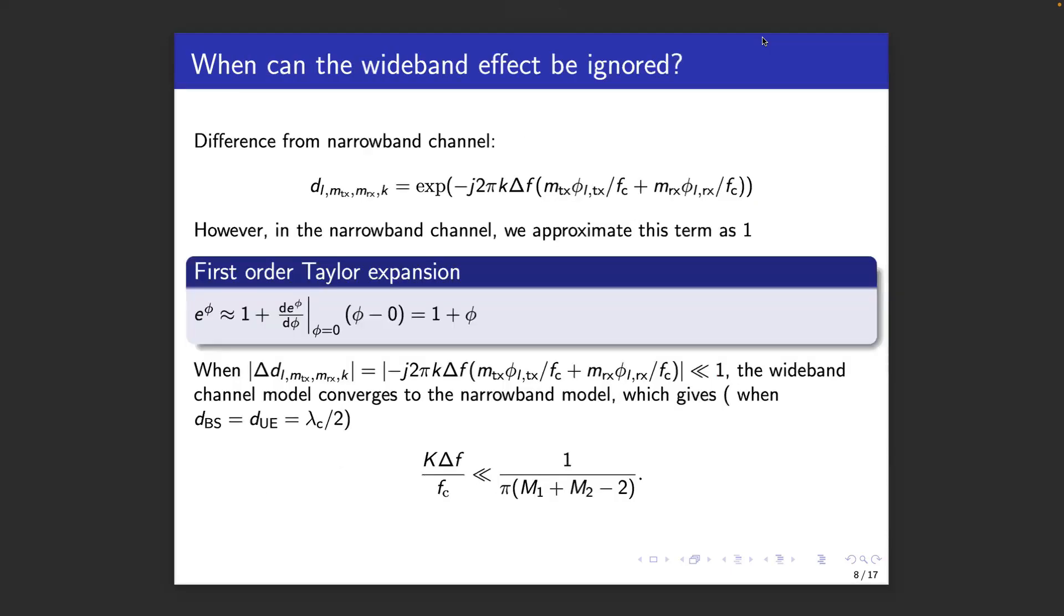Since we now have two models, one simple, the narrowband model, and one more complex, the wideband model, it is natural to ask which model can be used when. This slide aims to provide an answer to this question. The entries in DL that represent the difference between the conventional narrowband and the more complex wideband channel are shown here. In the narrowband model, again, these entries are all equal to one.